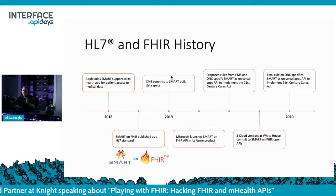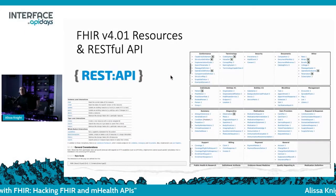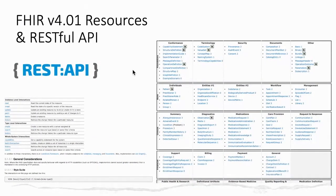In 2019, CMS committed to SMART bulk data specs, and Microsoft launched SMART on FHIR APIs in its Azure product. In 2020, the final rule on ONC specified SMART as the universal apps API to implement the 21st Century Cures Act. There are deadlines and penalties around information blocking. These are all the FHIR version 4 resources — things covering medications, diagnostics, care and provision, billing, and more. FHIR is a RESTful API.